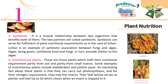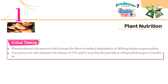4. Insectivorous Plants: These are plants which fulfill their nutritional requirements partly from soil and partly from small insects. Examples include bladderwort and pitcher plant. An interesting fact about these plants is that they can carry out photosynthesis, but for their nitrogen requirement they trap insects. Their leaf lamina serves as a pitcher and the leaf tip as a lid, which closes when an insect is trapped. Photosynthesis ensures the direct or indirect dependence of all living beings on green plants. This process not only maintains the balance of CO₂ and O₂ in the air but also provides us with purified oxygen to breathe.